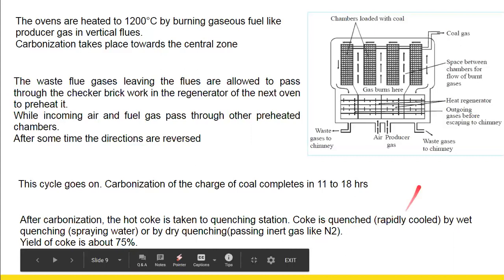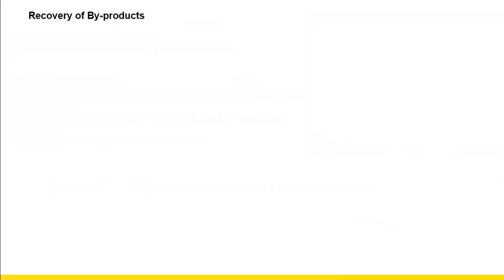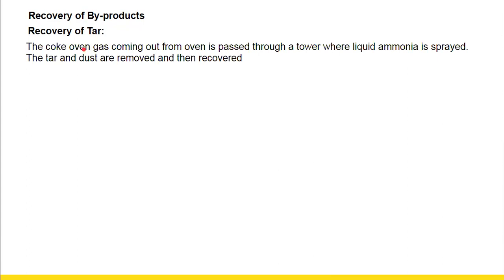The yield of coke is about 75%. Now, the byproduct gases are recovered. For the recovery of tar, the coke oven gas coming out from the oven is first passed through a tower where liquid ammonia is sprayed. The tar and dust are removed and then recovered. So for the removal of tar, liquid ammonia is sprayed.